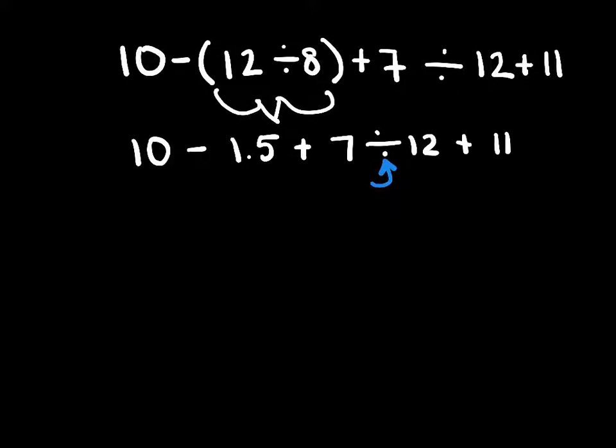If you type in your calculator, 7 divided by 12, you get 0.583333. So this part, we're going to say 0.583. So 10 minus 1 1⁄2 plus 0.583 plus 11. Now all we have left is addition and subtraction.